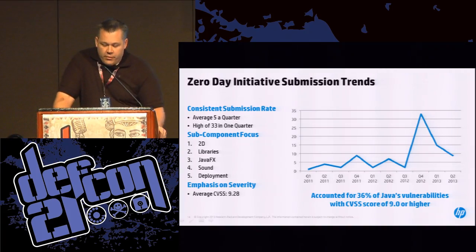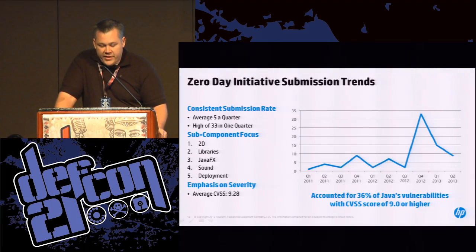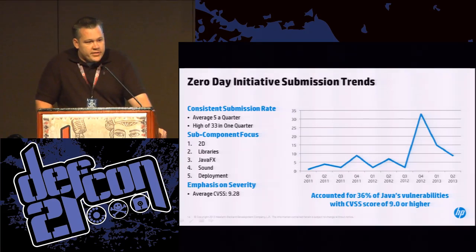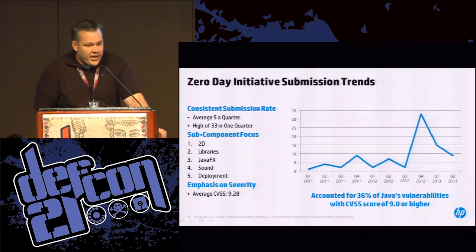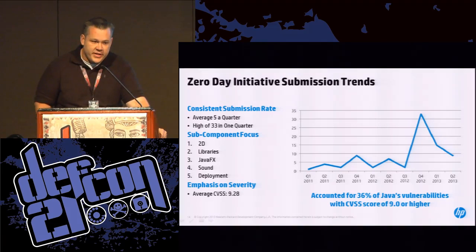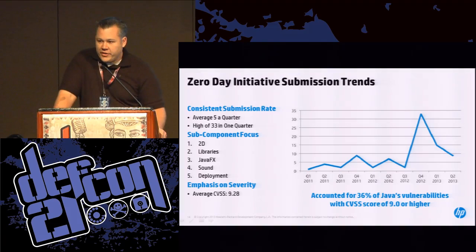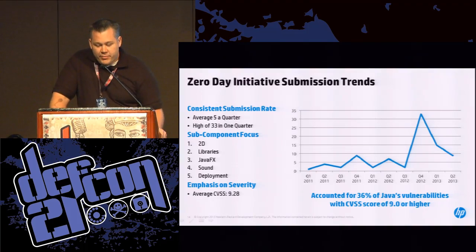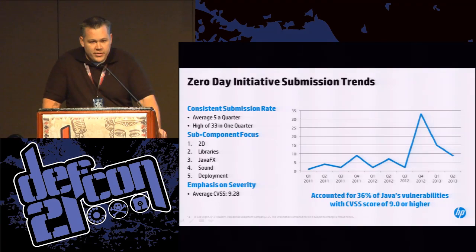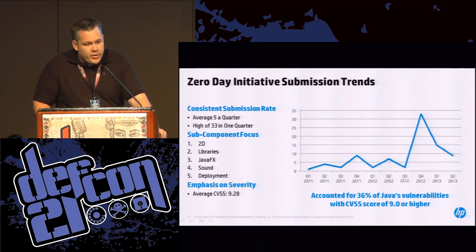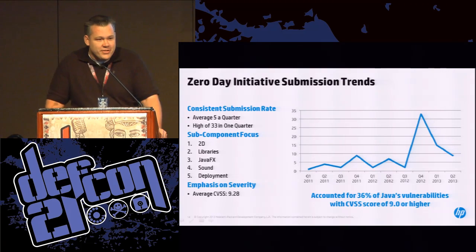Our researchers actually account for 36% of Java vulnerabilities with a CVSS score of 9 or higher — on average our researchers are scoring about a 9.28 in CVSS, so they're focusing on severe vulnerabilities in the framework itself. We can look at it two ways: either ZDI researchers are focusing on components that produce the most vulnerabilities, or the components they're focusing on end up in the most vulnerable list when they start looking at them.